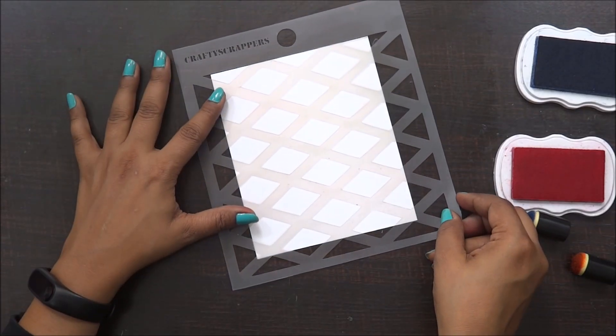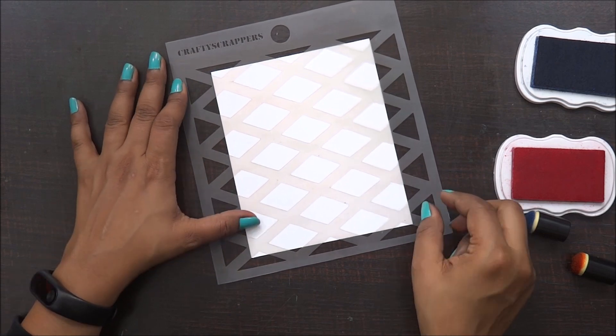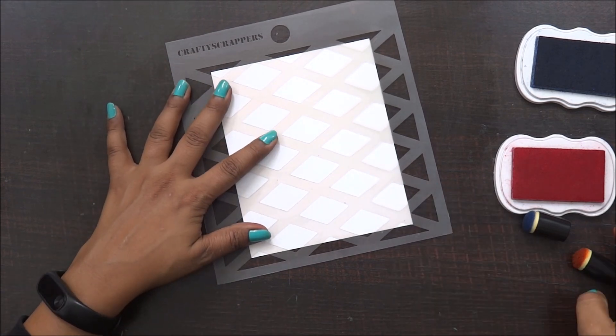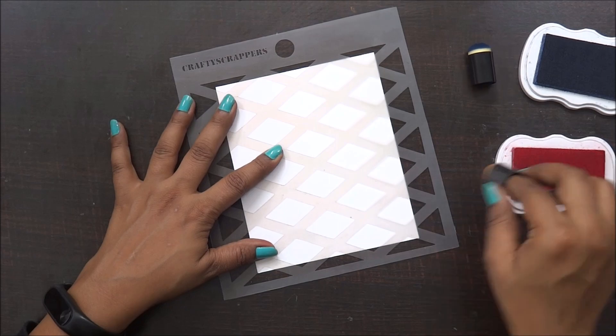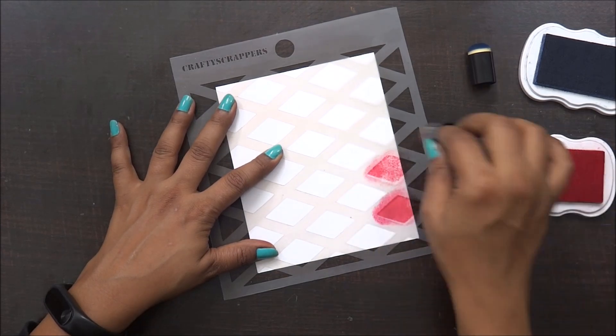For the second one, again I'm going to use the single stencil, the other design, and show you what kind of pattern it has. So this one has a really cute diamond shape and I'm going to use a single shade and create the pattern on my cardstock.